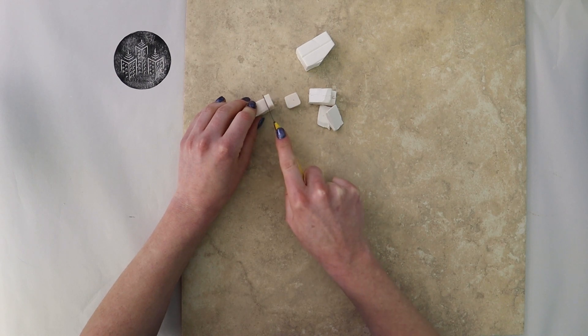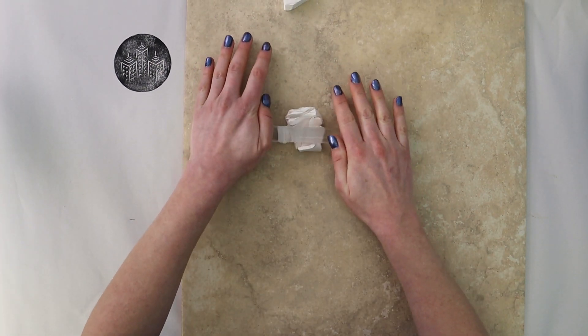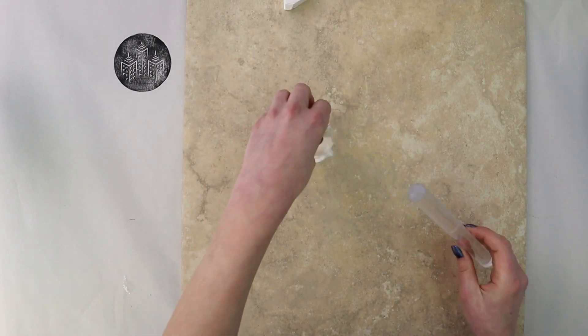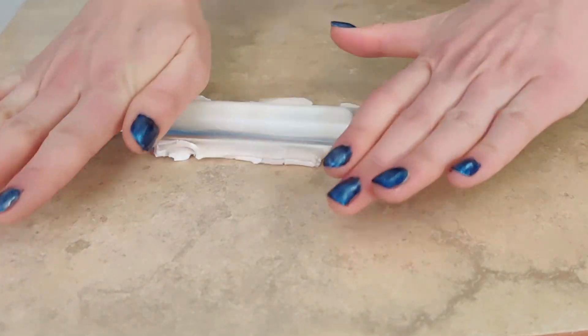The first thing you want to do is condition your clay so it's workable. My white Sculpey was a little bit tough, so I added a little bit of translucent to soften this, and then I just mixed it all together until it was a nice workable consistency.